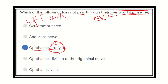Through this mnemonic, O is for oculomotor nerve, A for abducent nerve, the ophthalmic division of the trigeminal nerve, and the ophthalmic vein. The ophthalmic artery does not pass through the superior orbital fissure — it passes through the optic canal along with the optic nerve, which is the second cranial nerve.